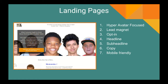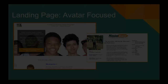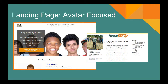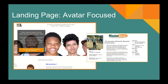Landing pages need to have seven core steps. Continuing with the Boyz II Men example — is it avatar-focused? They attract mentors, and here's what that looks like. The headline says 'What Everyone Ought to Know About Working with Troubled Teens.' That language speaks directly to the mentor-type volunteer looking for information. They've taken the time to use their persona for the landing page when it comes to the pictures, the words, and everything they've done.